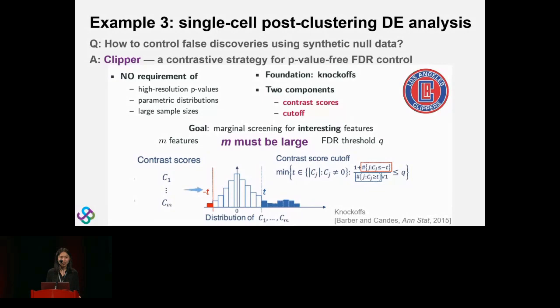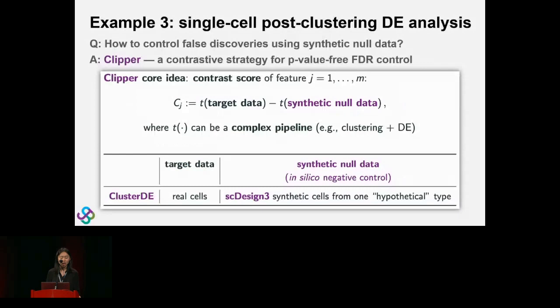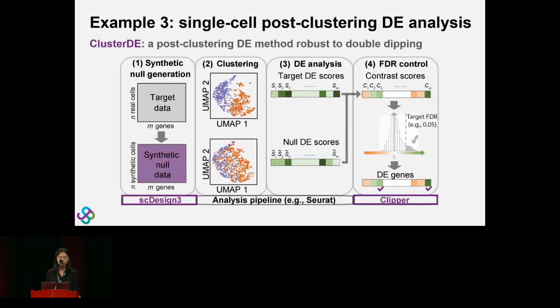The contrast score can be defined as a difference — the simplest way. We apply a procedure to target data and synthetic null data simultaneously, getting the DE score for gene j from target data (sⱼ) and from null data (s̃ⱼ), and take the difference as the contrast score. If gene j is not a true DE gene, which side is bigger is random. Just to note: the synthetic null is generated by scDesign3. So this is the whole ClusterDE method: from the two sets of DE scores we get contrast scores, one per gene, find a threshold, and genes whose contrast scores exceed the threshold are called DE genes.